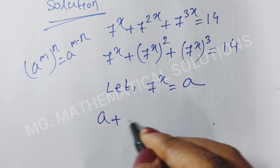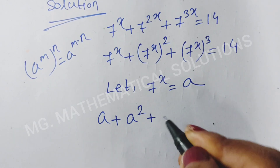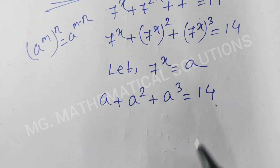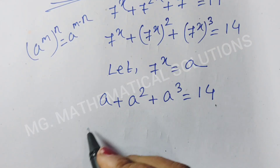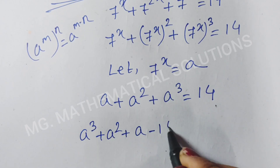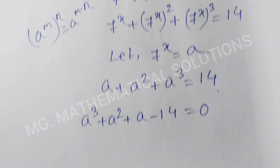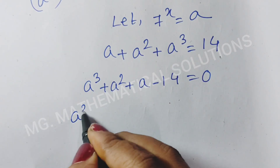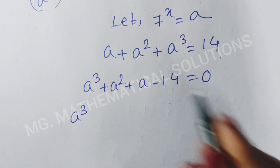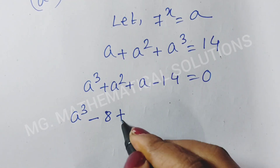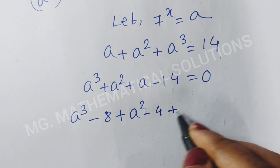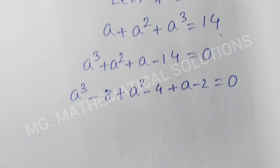So a plus a squared plus a cubed equal to 14. Now we write 14 to the left side. So a cubed plus a squared plus a minus 14 equal to 0. We can write minus 14 as minus 8 minus 4 minus 2. So a cubed minus 8 plus a squared minus 4 plus a minus 2 equal to 0.